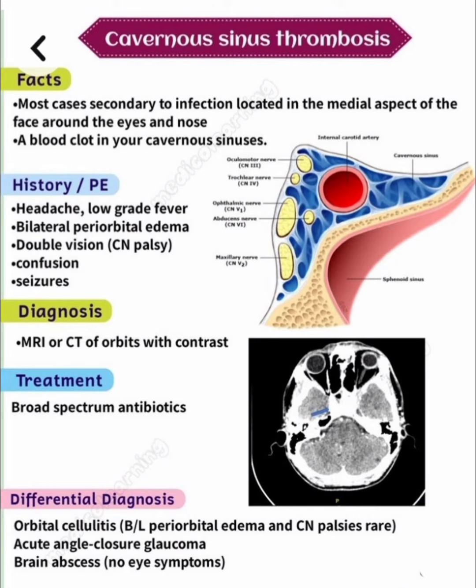The differential diagnosis of cavernous sinus thrombosis includes orbital cellulitis, which presents with bilateral periorbital edema but cranial nerve palsy is rare; acute angle closure glaucoma; and brain abscess, which has no eye symptoms. CST is secondary to infection in the medial aspect of the face around the eyes and nose, causing a blood clot in the cavernous sinuses.